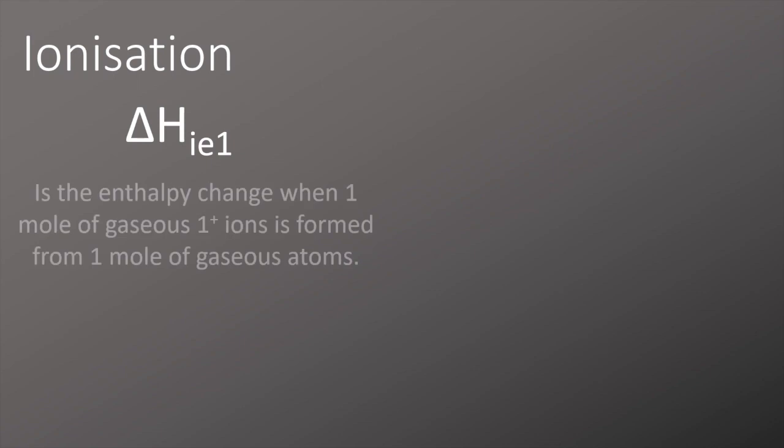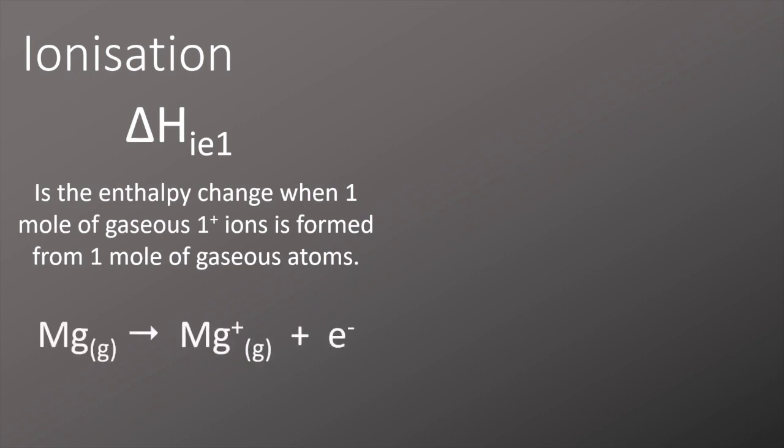We're going to start off by defining the enthalpy of ionization. This is the same as ionization energies which we looked at in the first year where we looked at the trends across the periods and down the groups. Delta HIE1 is the first ionization energy and can be defined as the enthalpy change when one mole of gaseous one plus ions is formed from one mole of gaseous atoms. This can be represented with the magnesium atom forming a magnesium one plus ion and one electron.